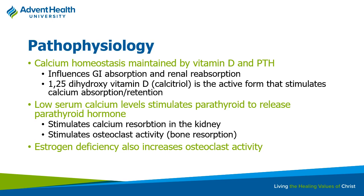If either ionized calcium or vitamin D are down, PTH levels will go up. By supplementing with more vitamin D and calcium, the parathyroid is triggered to say it has enough and doesn't need to release more. PTH affects the GI tract to increase calcium and vitamin D absorption, takes calcium from bone, and causes reabsorption of calcium and phosphate in the kidneys.